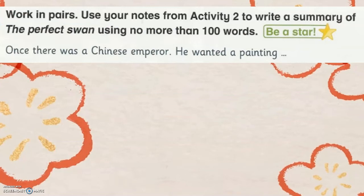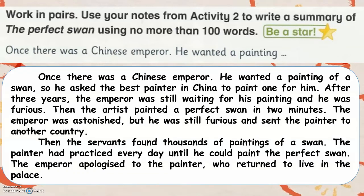Work in pairs. Use your notes from Activity 2 to write a summary of The Perfect Swan using no more than 100 words. Once, there was a Chinese emperor. He wanted a painting of a swan, so he asked the best painter in China to paint one for him. After three years, the emperor was still waiting for his painting and he was furious. Then, the artist painted a perfect swan in two minutes. The emperor was astonished, but he was still furious and sent the painter to another country. Then, the servant found thousands of paintings of a swan. The painter had practiced every day until he could paint the perfect swan. The emperor apologized to the painter, who returned to live in the palace.